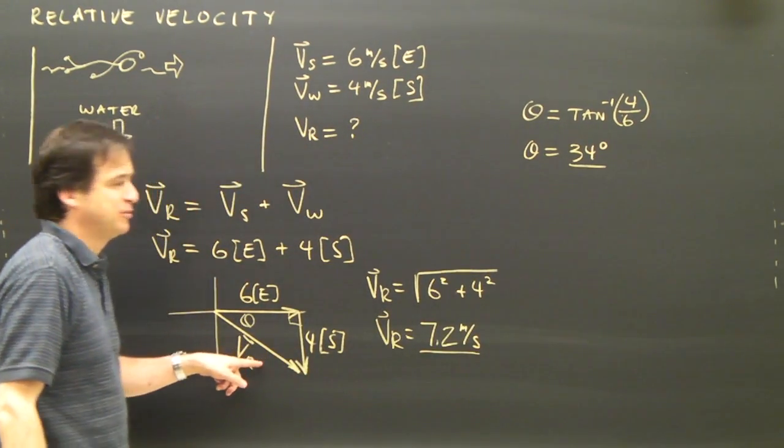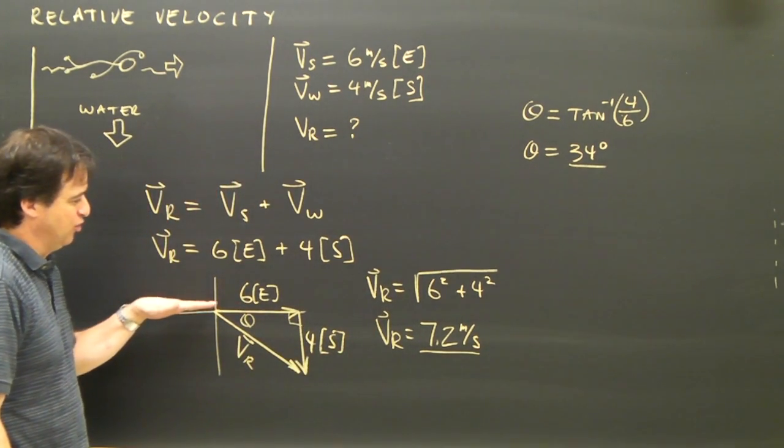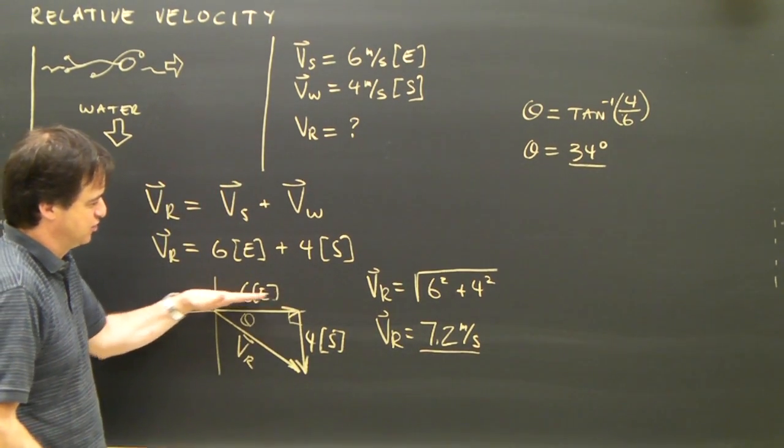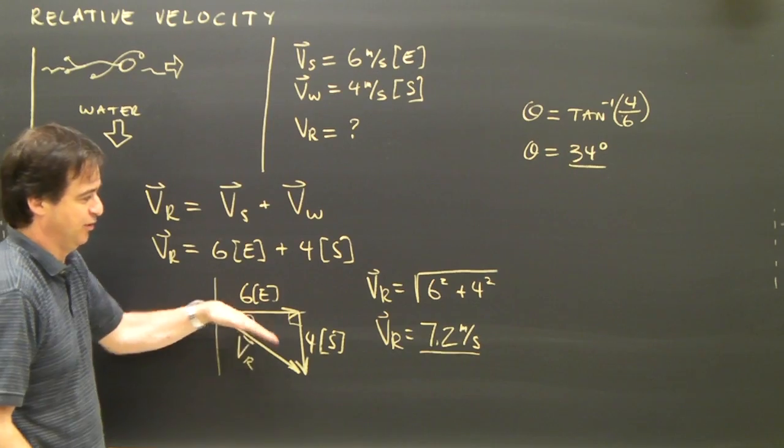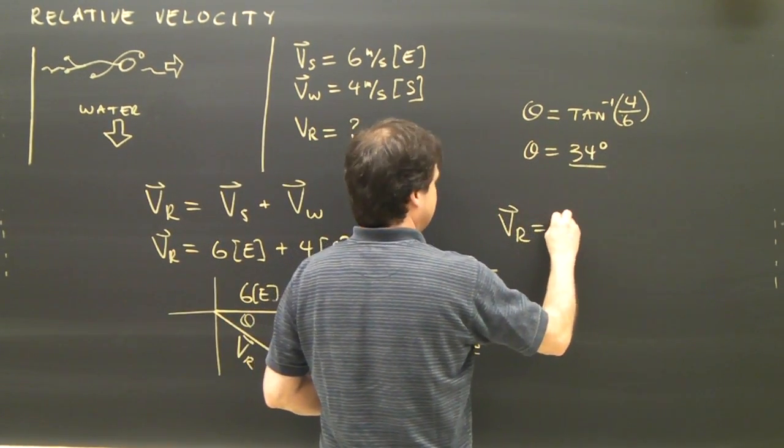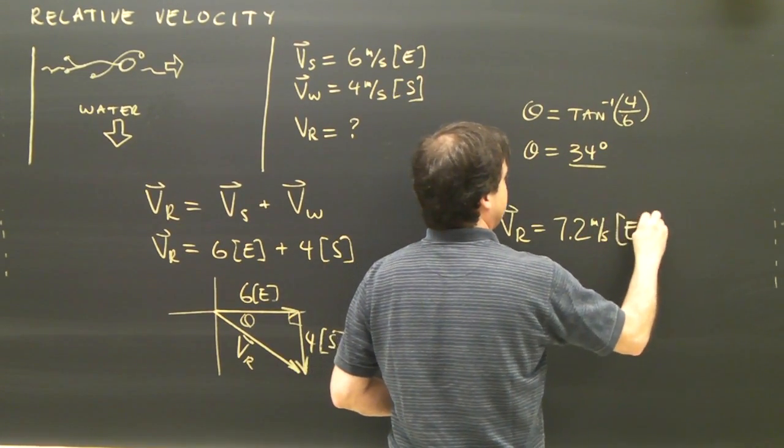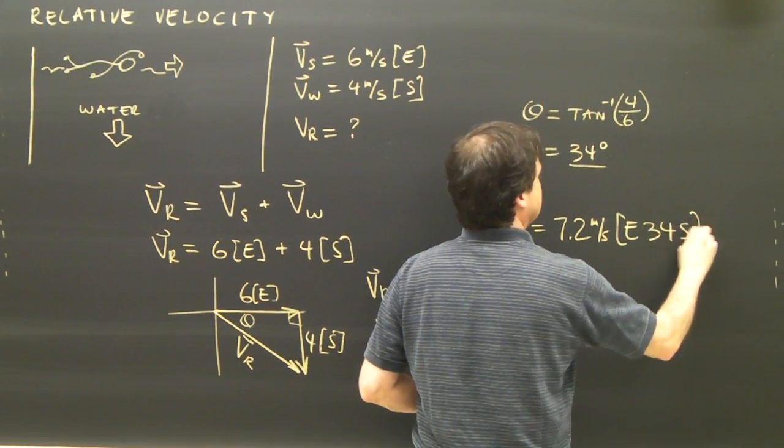So I have the magnitude of my resultant velocity. I have the angle and I'm going to call this east. So this is going to be east, 34 south. So my final answer is 7.2 meters per second east, 34 south.